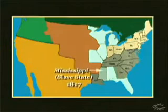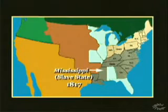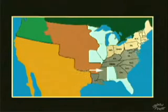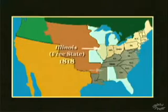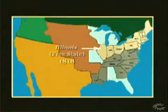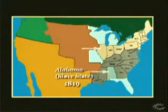Mississippi was added to the Union in 1817 as a slave state, meaning a state in which slavery was legal. The next year, Illinois was added as a free state, meaning a state in which slavery was banned. And in 1819, Alabama was added as a slave state.